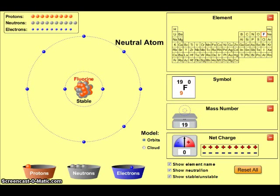Here is a neutral fluorine atom with a stable nucleus containing nine protons and ten neutrons. The total number of electrons is nine, matching the number of protons.